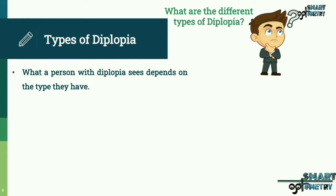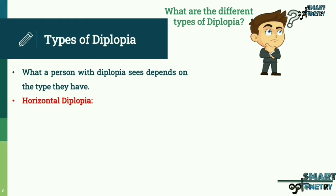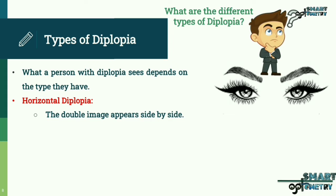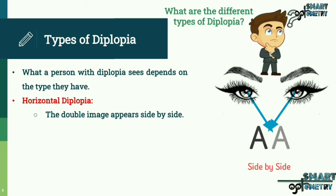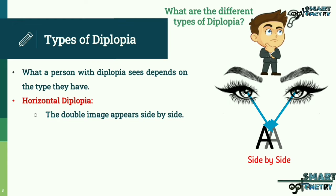What a person with diplopia sees depends on the type they have. Horizontal diplopia: the double image appears side by side.